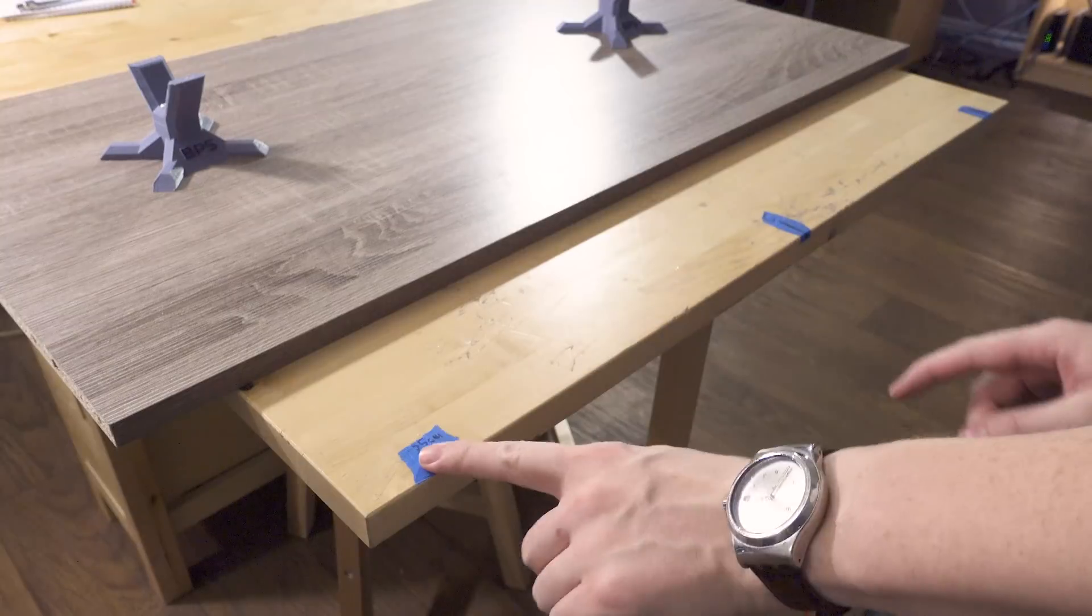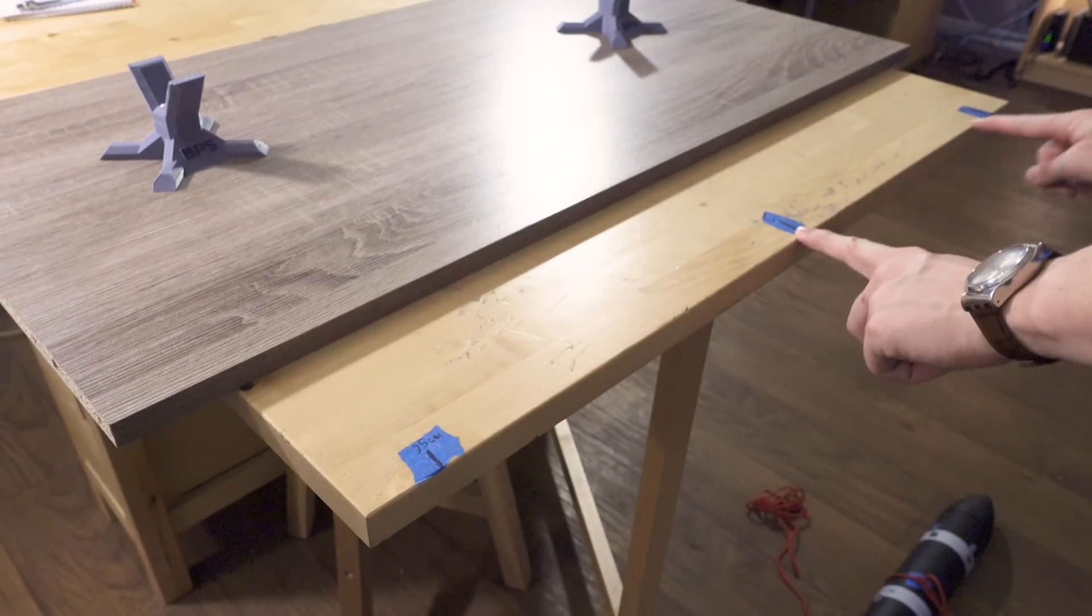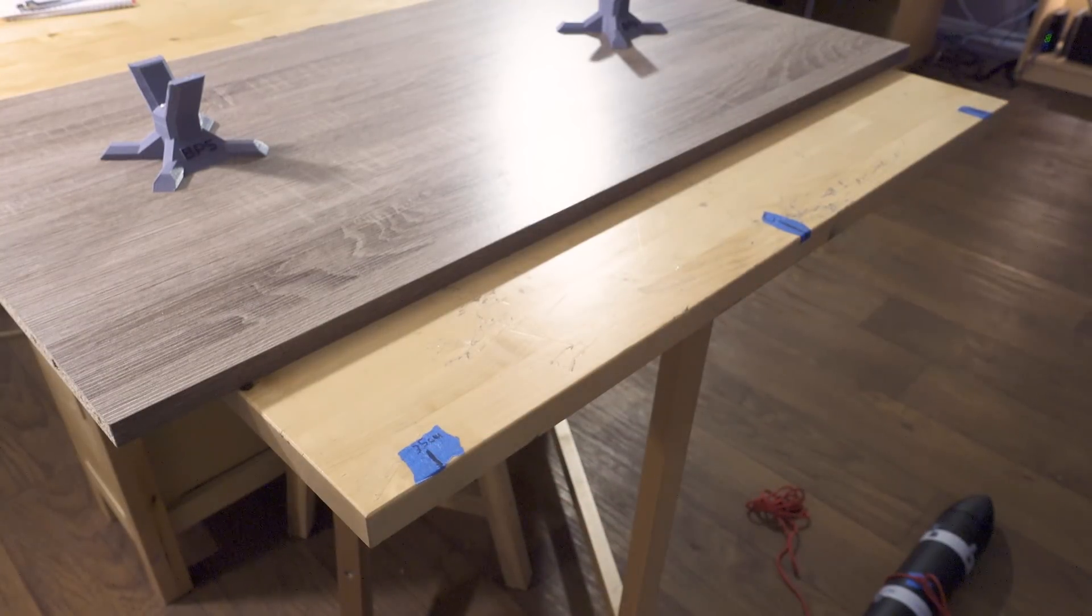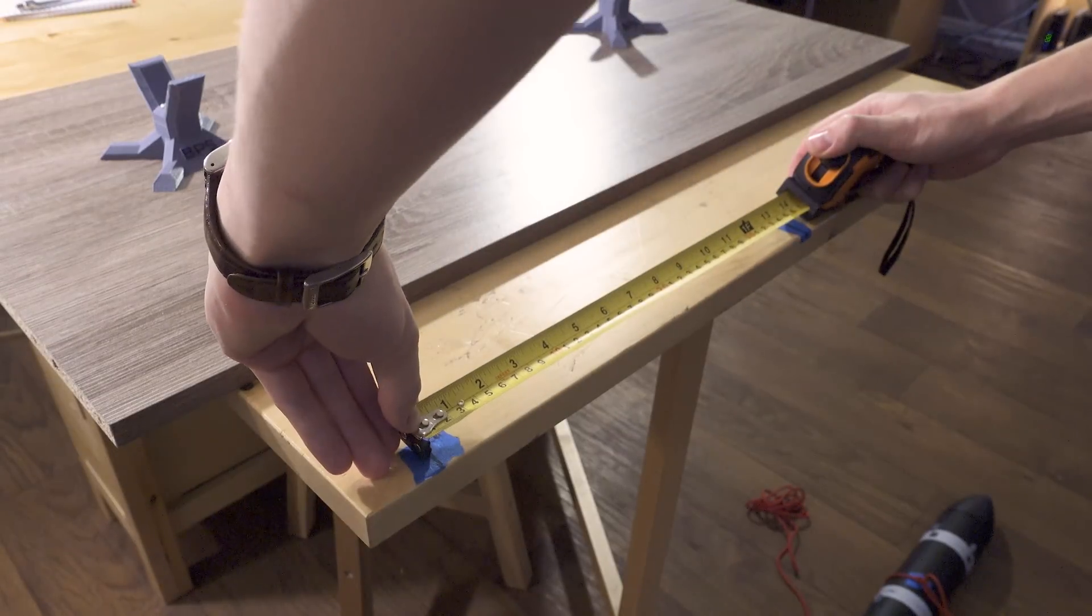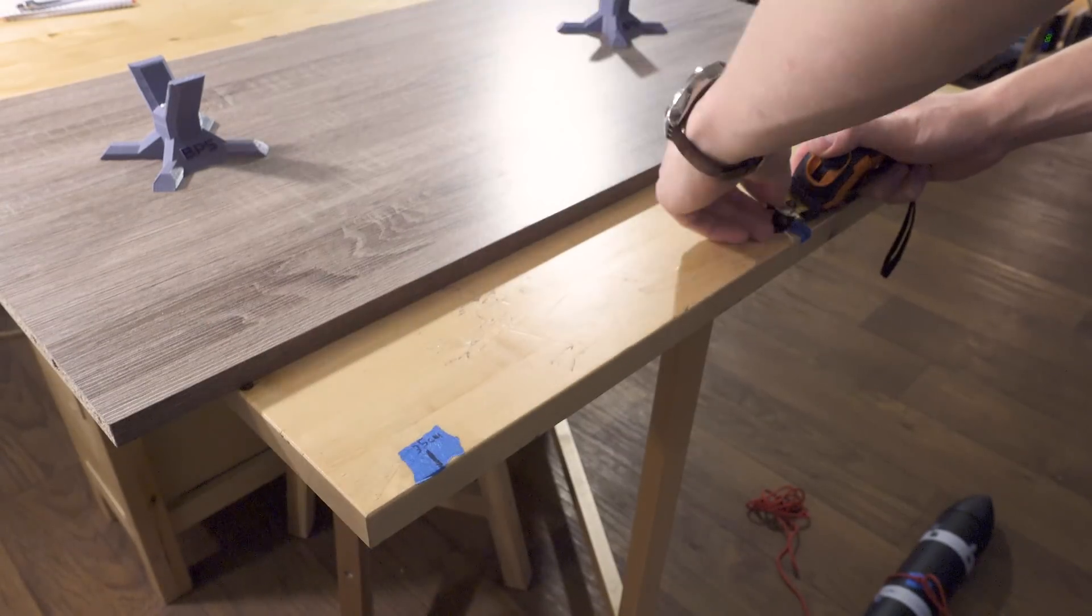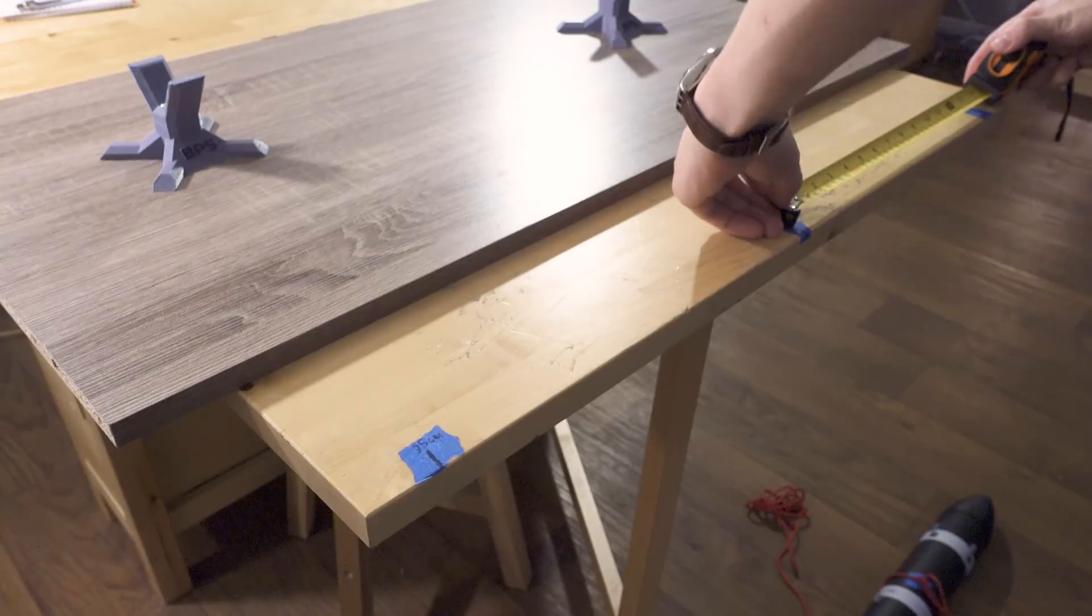Here you can see I've marked points that are already 35 centimeters from one center point. This is the same as the string to COM distance that we marked earlier. If you're tuning a rocket yourself right now, it can be helpful to mark these distances on wherever you're hanging it from.